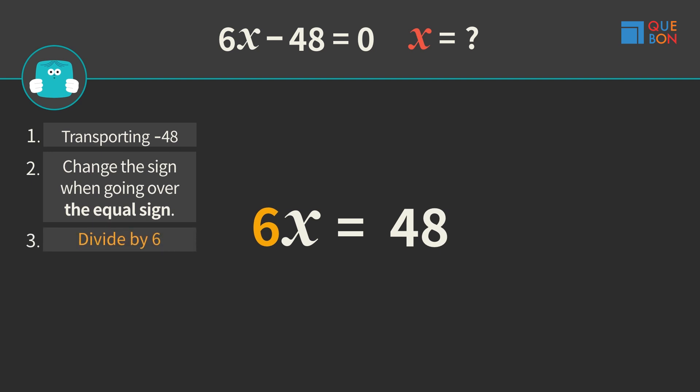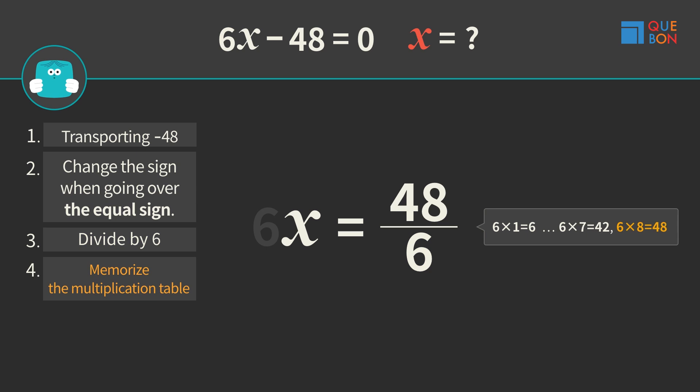Next, Sweaty moves 6 to the other side of the equation and divides 48 by 6. Then Sweaty memorizes the multiplication table: 6 times 1 is 6, 6 times 7 is 42, and 6 times 8 is 48. So the answer must be 8.